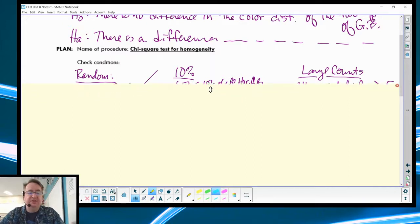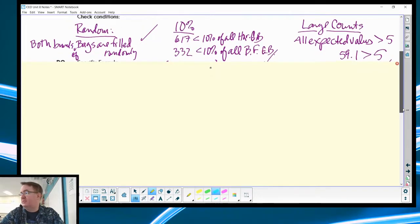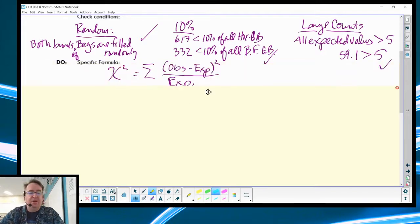Checking conditions: random, 10%, and large counts, same as before. Both brands of bags are filled randomly. For the 10% rule, 617 is less than 10% of all Haribo gummy bears, and 332 is less than 10% of all Black Forest gummy bears. Large counts: all expected counts were bigger than 5 in both groups. 59.1 was my smallest, definitely bigger than 5. As we fly through this, please pause as you need to.